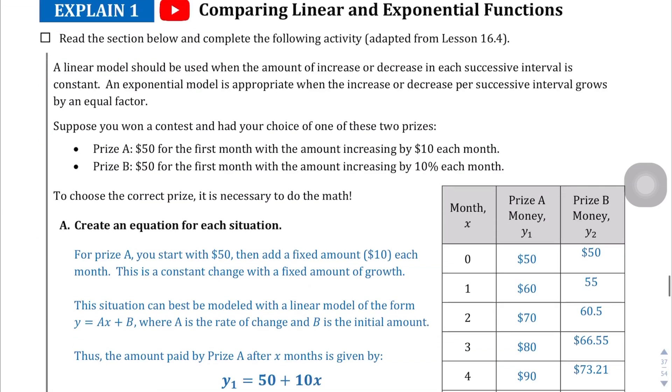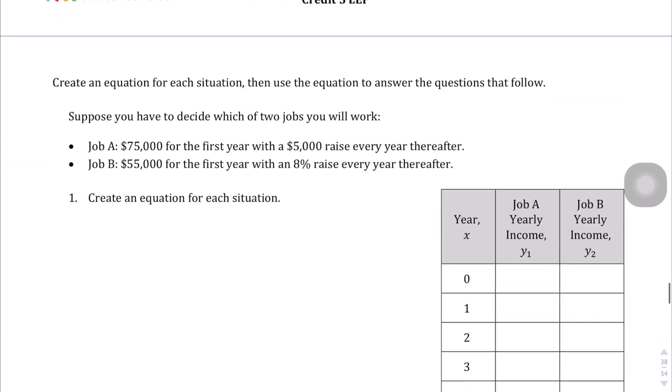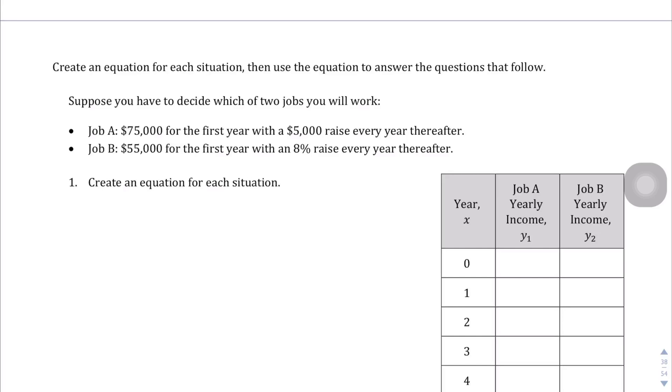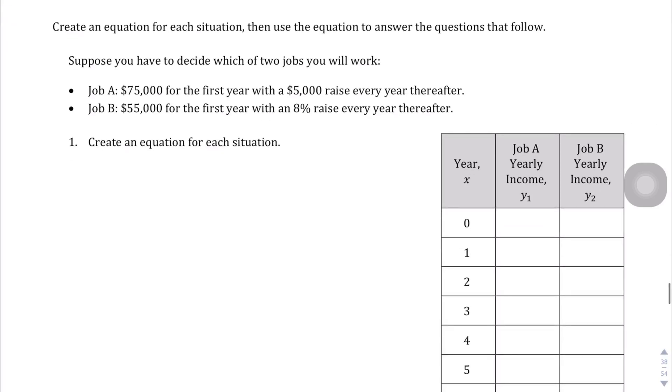In Explain 1, you can go ahead and read that part, but it'll explain what to do in the next problem. Here we have a context where we have to decide which of two jobs you'll work. You might be in the fortunate situation in the future where you can choose between two jobs. So job A pays $75,000 for the first year with a $5,000 raise every year thereafter. Or job B, you'll take a lower starting salary of $55,000 for the first year, but you get an 8% raise every year after that.